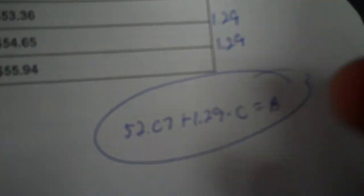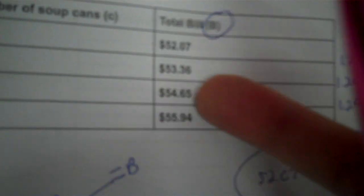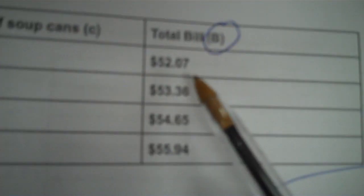To verify: enter 52.07 + 1.29 × c; pick c = 2, and you should get 54.65. For the graph, the vertical axis is b and the horizontal axis is c, going from zero through three by ones. The lowest b value was 52.07, so I started at a nice round number below that — 50 — and used a scale of 1 since I only needed to reach 55.94.